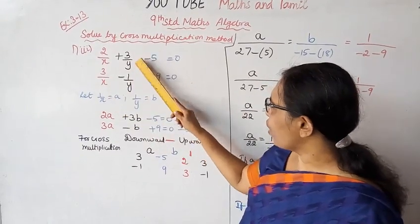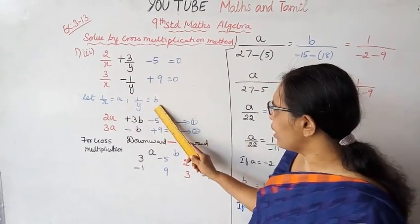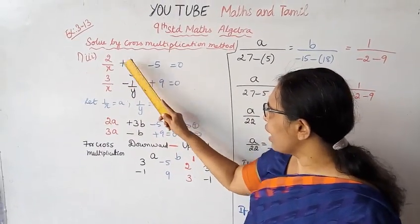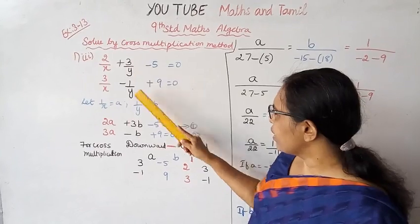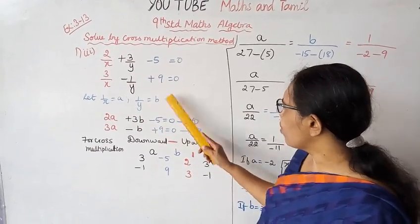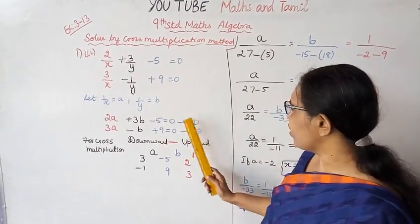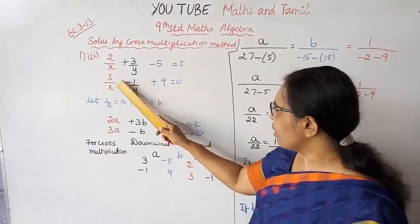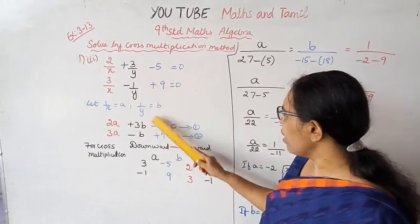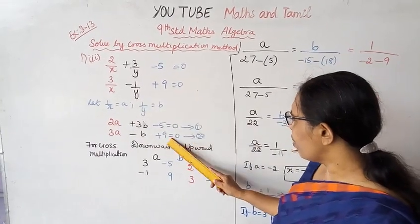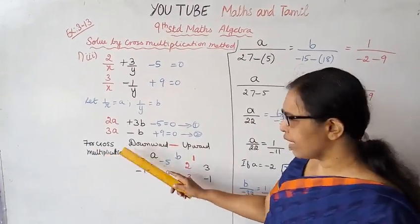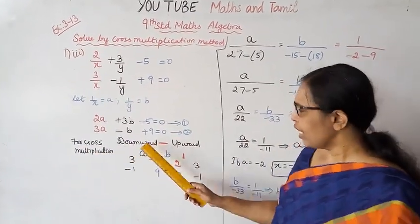Let 1/x equal to a and 1/y equal to b. Then the equations become: 2a plus 3b minus 5 equal to 0 (first equation), and 3a minus b plus 9 equal to 0. Now apply cross multiplication method.